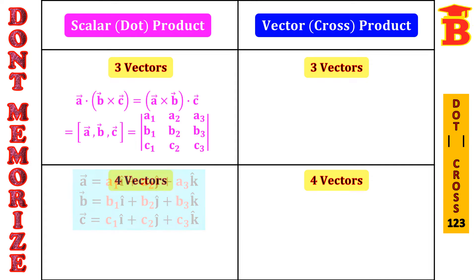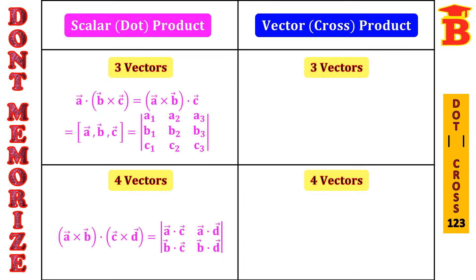Next, let us see the dot product of 4 vectors formulas. Here we have A, B, C, D — 4 vectors. We have the bracket for the cross product: that is (A cross B) bracket dot (C cross D) bracket. This is also a determinant formula: A·C, A·D in the first row and B·C, B·D in the second row.